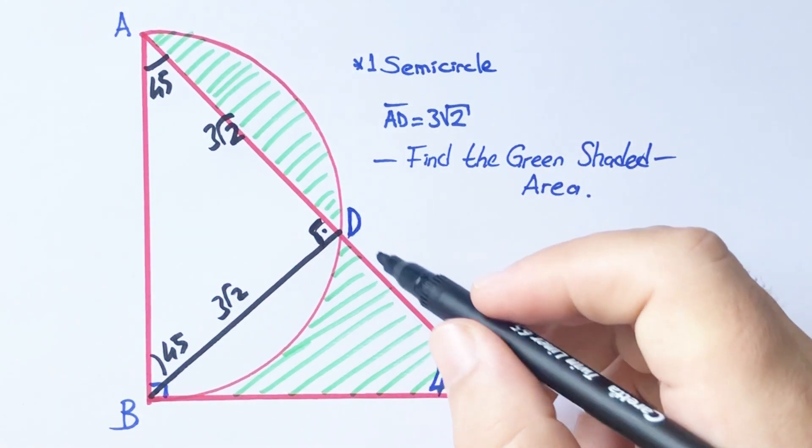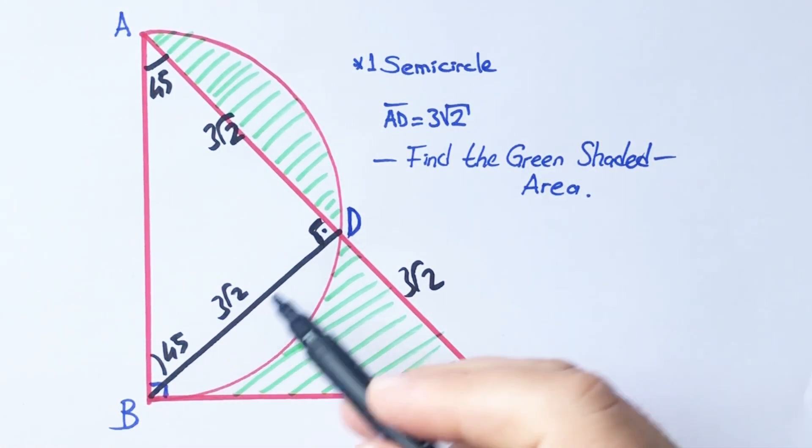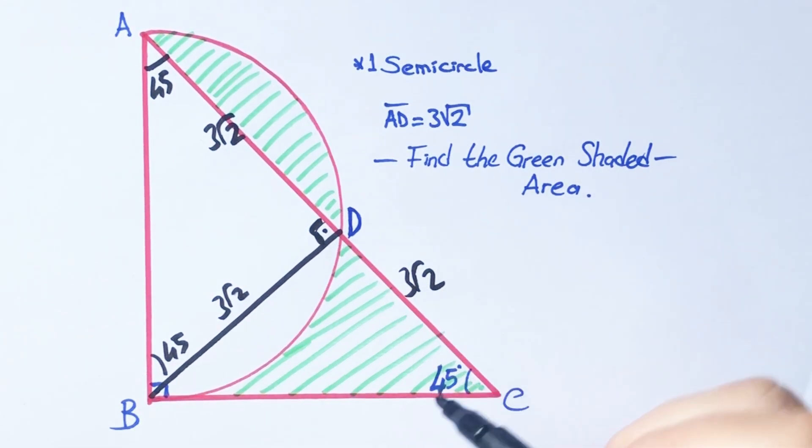So BDC is also an isosceles right triangle. That means BD must equal DC.